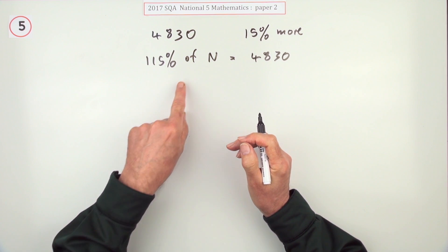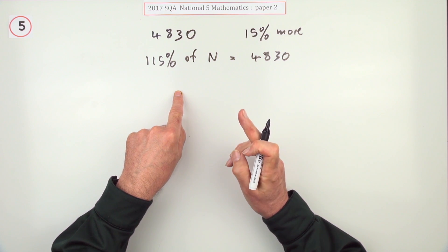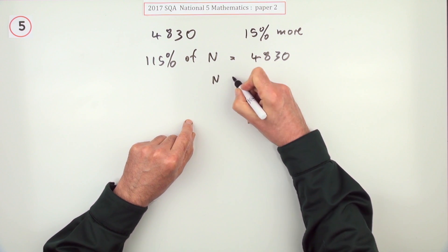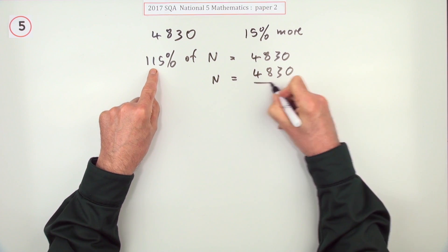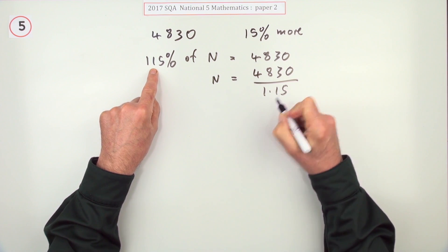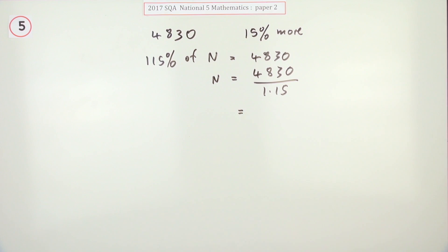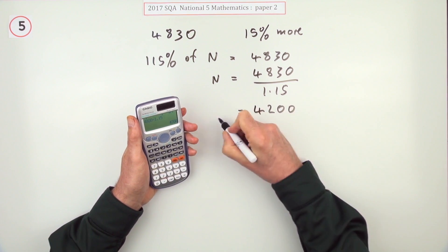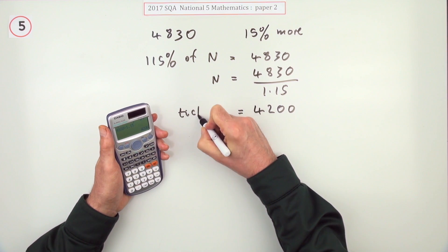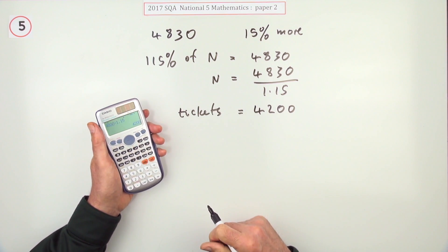When you press the buttons and you get a nice number, you probably think well that must be right. That must be the number of tickets: 4200.